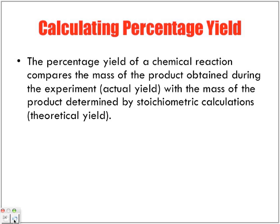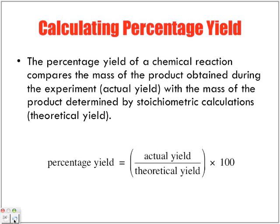Calculating percentage yield. The percentage yield of a chemical reaction compares the mass of the product obtained during the experiment, which is the actual yield, with the mass of the product determined by stoichiometric calculations. As we said, theoretical yield. Theoretical, in theory, what can we produce? Using stoichiometry. And then what is actually being produced? And actually figure out what percentage do we have of our final product.